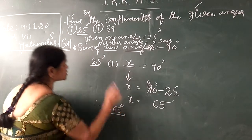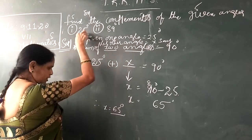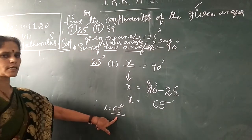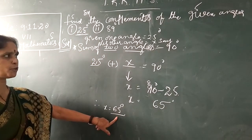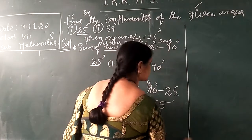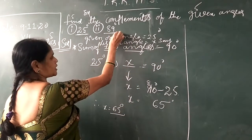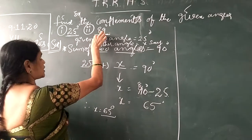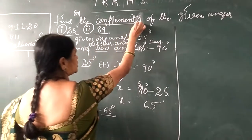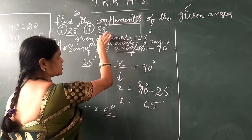What is this 65 degrees? The complementary angle of 25 degrees is 65 degrees. I know you all understood. The next problem: I want to explain it here as well. What is the one angle given here? 89 degrees. So you also have to find out the complement of this angle. What is the complement for 89 degrees?